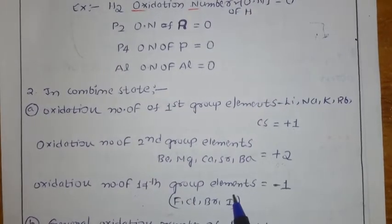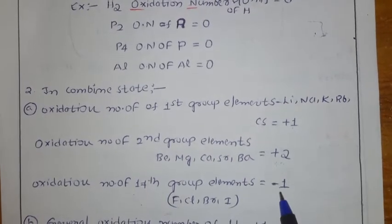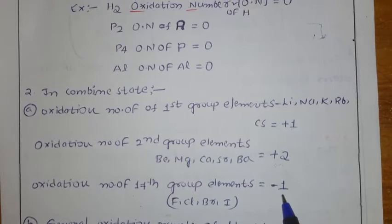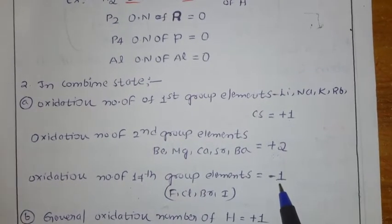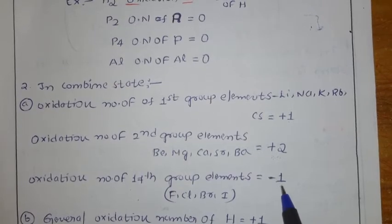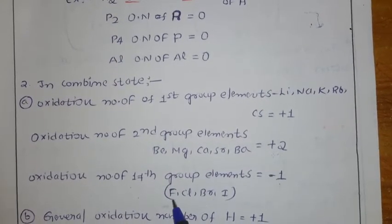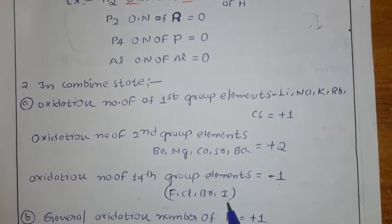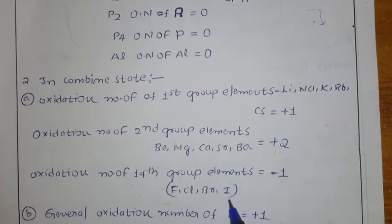The oxidation number of seventh group elements, the halogens — fluorine, chlorine, bromine, iodine — the general oxidation number is minus 1. This is because to get the noble gas configuration they need 1 more electron, so they gain one. Their general oxidation state is minus 1.